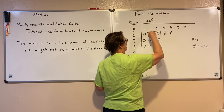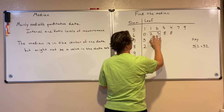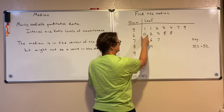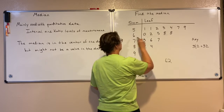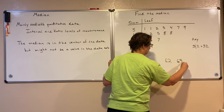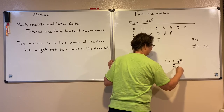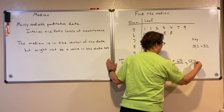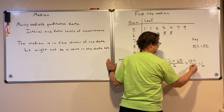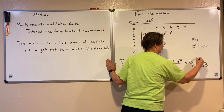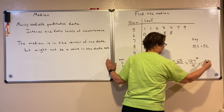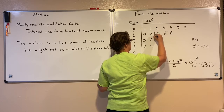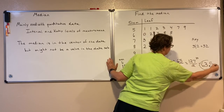My median is going to be right in the middle of those two. So I need to look right in the middle of these two values — those numbers are 62 and 65. To find that midpoint, we add the two numbers and divide by 2: 127 divided by 2 is 63.5. So right in the middle there is 63.5.